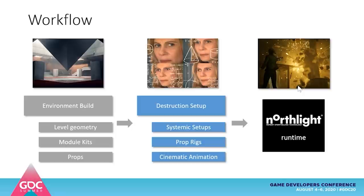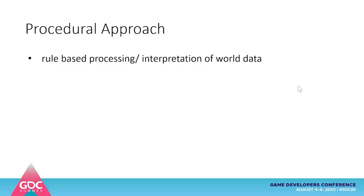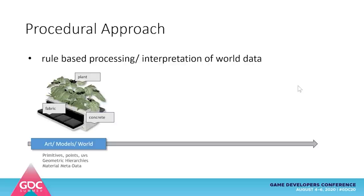For our workflow, it was fairly standard: environment artists provide level geometry, modules, kits, and props, then that goes into the effects department for destruction setup. We had systemic setups, properties, and cinematic animation for specific aspects. That all goes into Northlight, our in-house engine. We chose a procedural approach — rule-based processing and interpretation of world data. You get data, apply rules, change the data — that's the key.